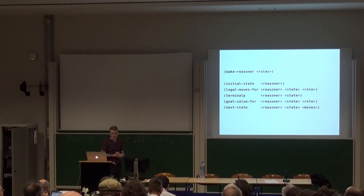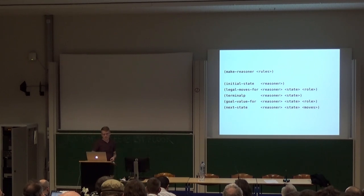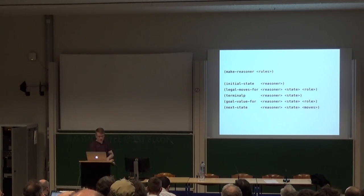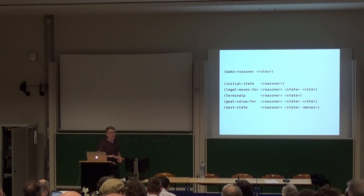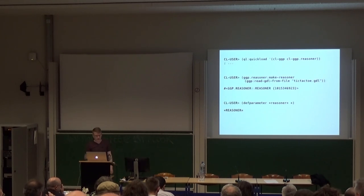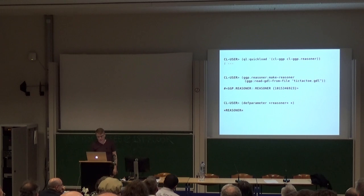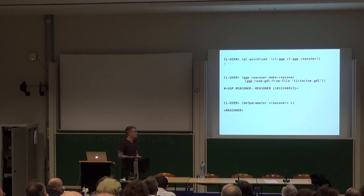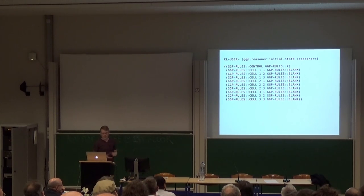Let's actually look at this and make the computer do something. The reasoner API has six functions and a hidden seventh one. We start with make-reasoner, which you just pass in the GDL rules — the list of rules we saw earlier — and it gives you back a reasoner. Then you can query that reasoner: you can ask what is the initial state of the game, what are the legal moves for player X in any particular state, whether the state is terminal, the goal value for a particular role, and given a state and some moves it'll give you back the next state. So we quick-load it, read some GDL from a file, pass it to make-reasoner, and then we'll say 'hey reasoner, what's your initial state?' — and it spits back that X has control and all nine cells are blank.